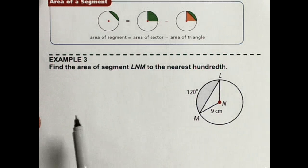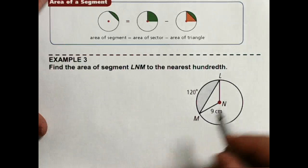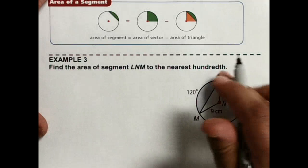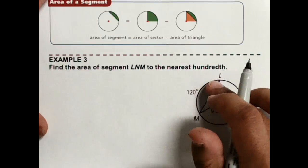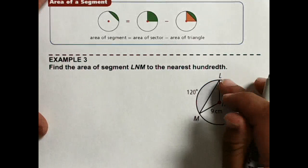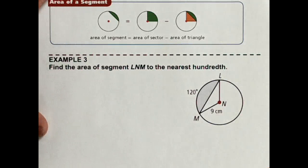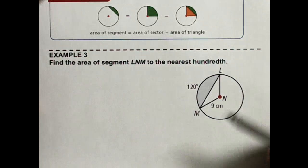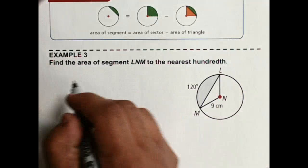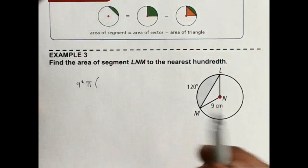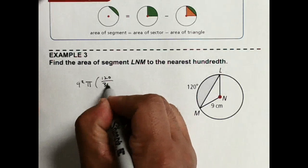All right, number three, area of a segment. So I have this section right here, LNM, that's got an angle of 120 degrees. And then I have this triangle right inside that. So let's figure that out. All right, so let's start with the area of the sector first. So I know I have 9 squared pi times 120 over 360.